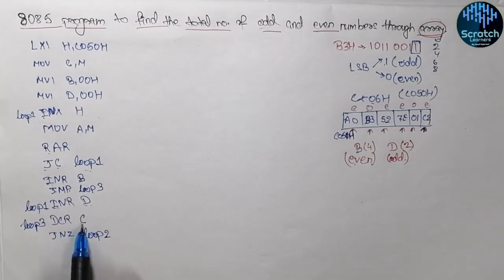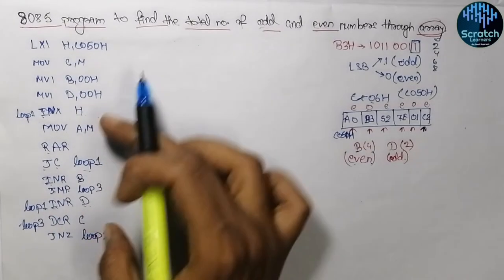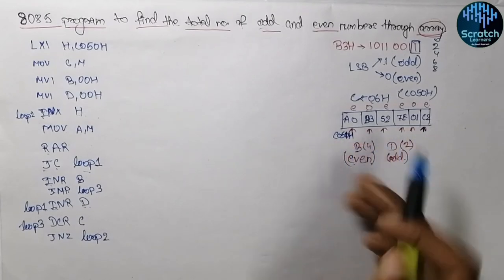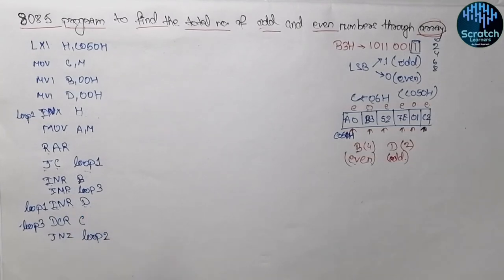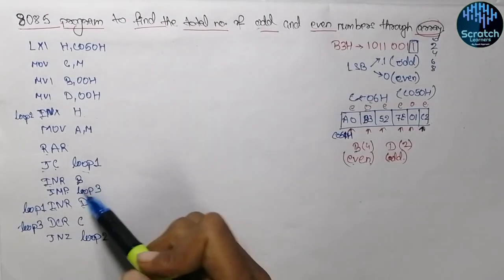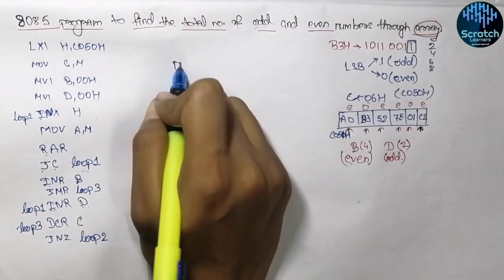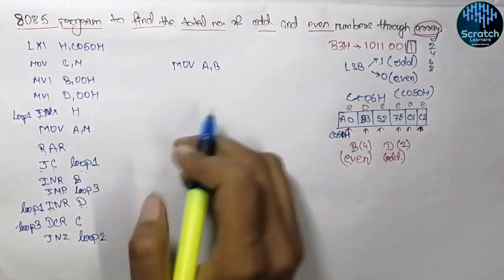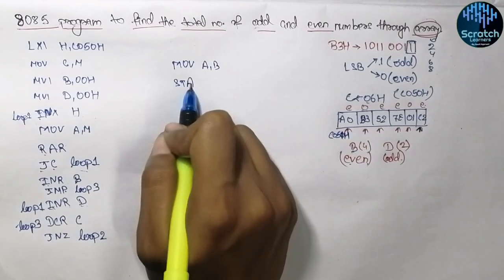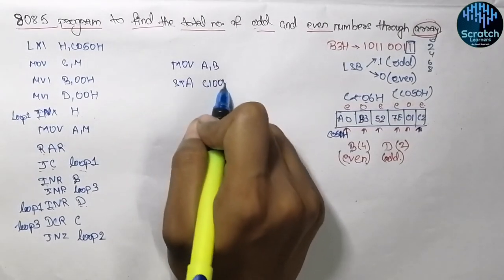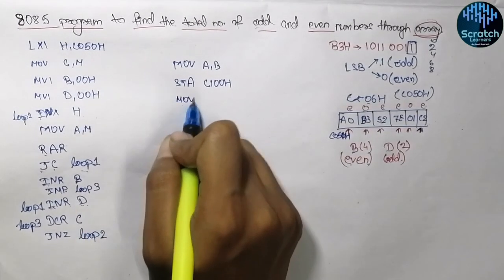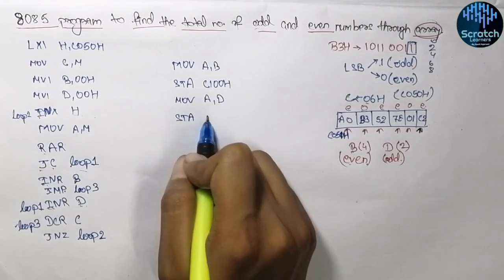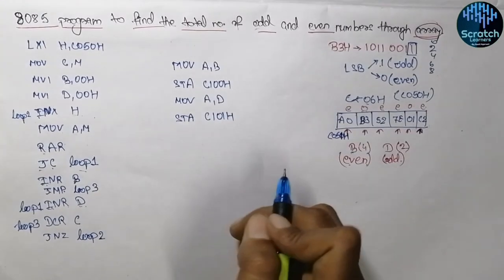After the unconditional jump we go to the DCR C and JNZ check, and the same process continues for all elements. Once the loop ends, we store the results. We move the content of register B into the accumulator and store it at memory address C100 hex. Then we move the content of register D into the accumulator and store it at C101 hex, then halt.